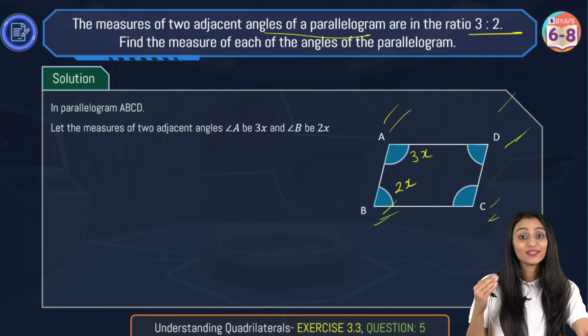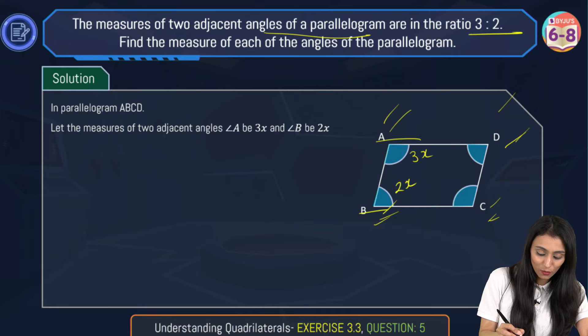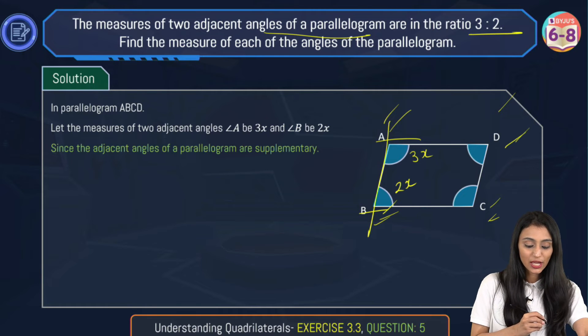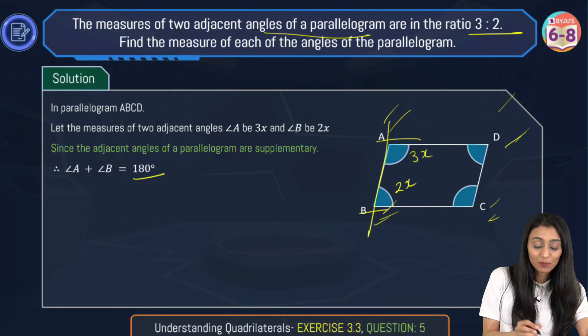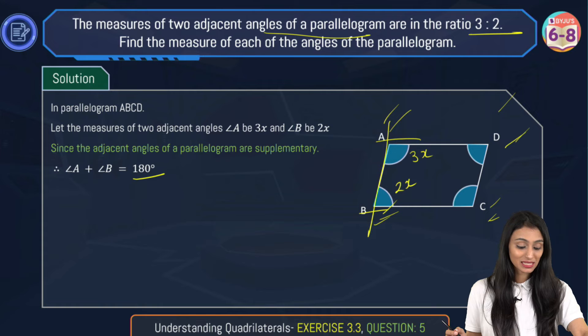We know that since these are adjacent angles, these lines are parallel over here, and this is a transversal. So sum of angles over here, angle A and angle B, is going to be 180 degrees. They could be supplementary.